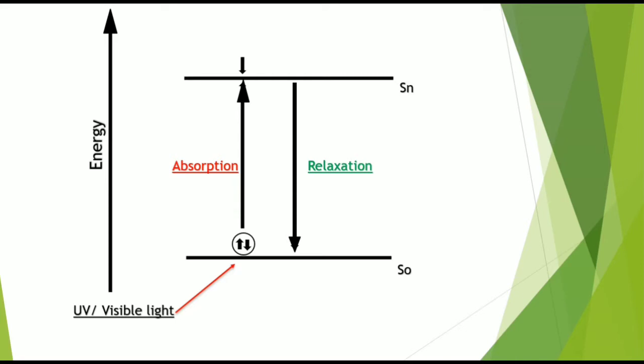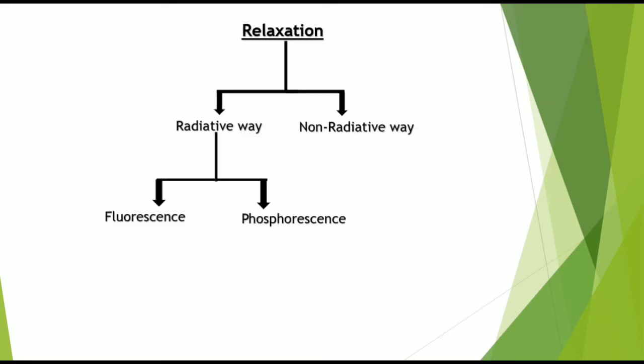As per the Perrin-Jablonski diagram, there are multiple pathways by which the absorbed molecular energy can be released. The relaxation can occur in many ways. The process of relaxation mainly occurs in two ways: first is the radiative way and second is the non-radiative way.